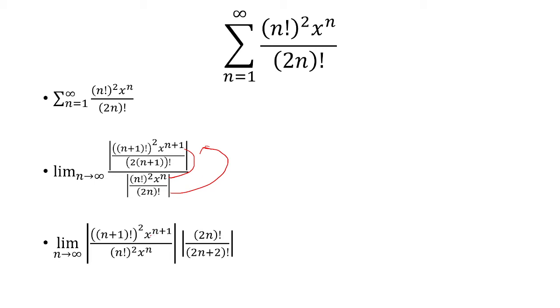Now the x to the n plus 1 over x to the n, that's just going to be x. And then 2n plus 2 factorial is 2n plus 2 times 2n plus 1 times 2n factorial. And the 2n factorial is going to cancel.